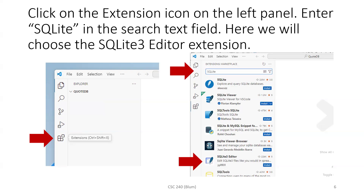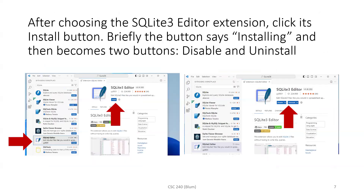Now I'm using the SQLite Editor, which has more of a spreadsheet-like interface — it will feel a bit more like Access or MySQL. You find this by clicking on Extensions, which gives you a search bar. You type SQLite and a bunch of options pop up. I'm going to go with the SQLite3 Editor. When I click on it, a tab opens and there's an Install button — I clicked it to install.